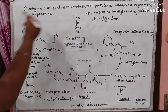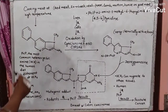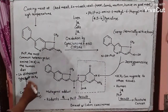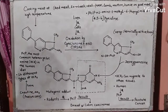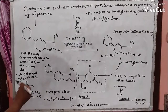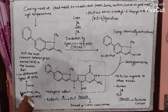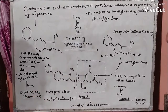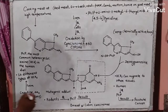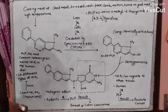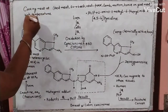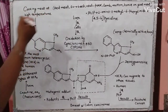Cooking meat at high temperature produces 16 different types of HCA. These HCAs are produced from creatine and amino acids, which are released from the cooking meat at high temperature.